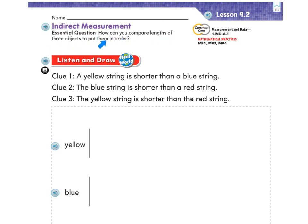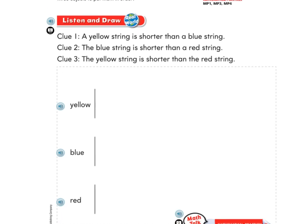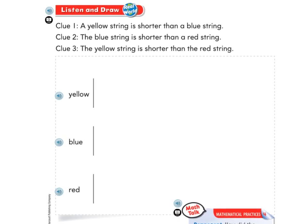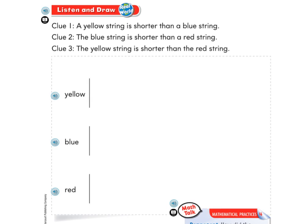Now this problem has a few clues. The first clue says a yellow string is shorter than a blue string. So we have yellow, blue, and red. I'm going to go ahead and draw a yellow string that is shorter than a blue string.